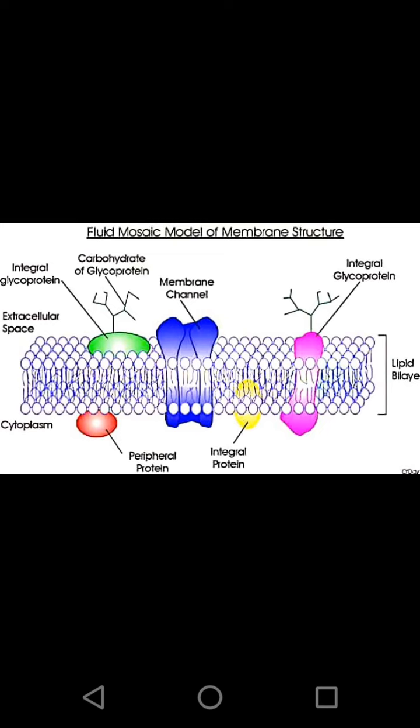The yellow and pink colors represent integral or intrinsic proteins, which are completely embedded inside the phospholipid bilayer. The red color represents peripheral or extrinsic proteins, which are present outside the phospholipid bilayer and are loosely attached to the polar heads.